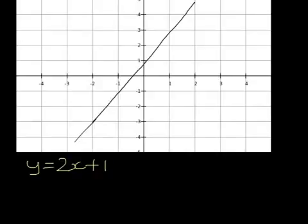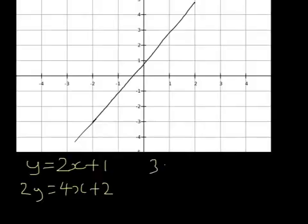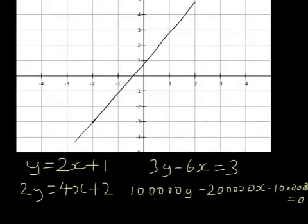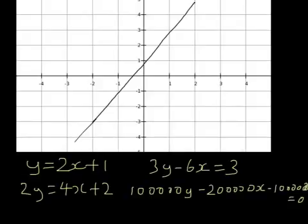There's an infinite number of ways of writing this equation. That's one way. Another way is to write 2y equals 4x plus 2. Another way would be to write 3y minus 6x equals 3. Another way would be to write 1,000,000y minus 2,000,000x minus 1,000,000 equals 0. There's an infinite number of ways of writing this line. What we're going to be looking at in this video is the way of writing the equation of a line using vectors.